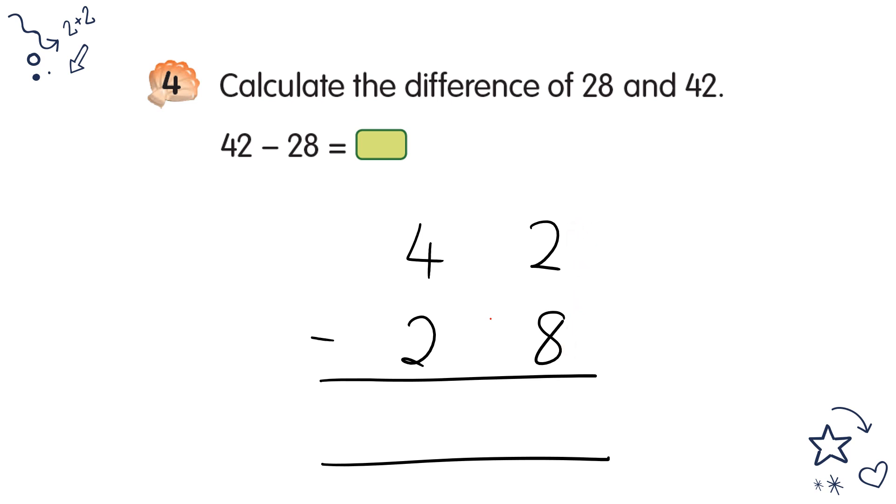2 minus 8 cannot, so you borrow from 4. That's left 3. This becomes 12. 12 minus 8 equals, equals what? Equals 4. 3 minus 2 equals 1. So your answer is 14.